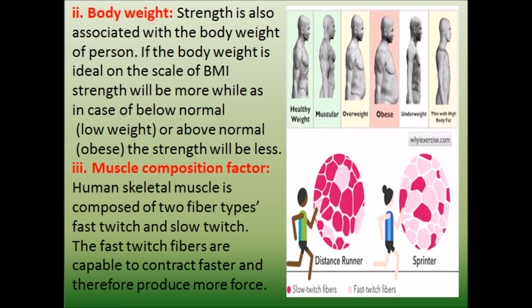The third factor is muscle composition. Human skeletal muscle is composed of two fiber types: fast twitch and slow twitch. The fast twitch muscle fibers are capable of contracting faster and therefore produce more force, which helps in higher strength, because when they produce more force they are able to produce more strength.